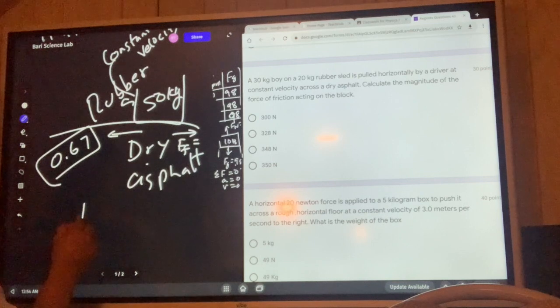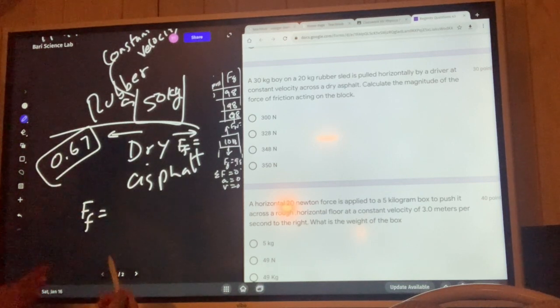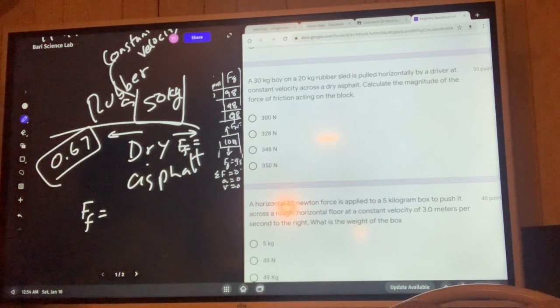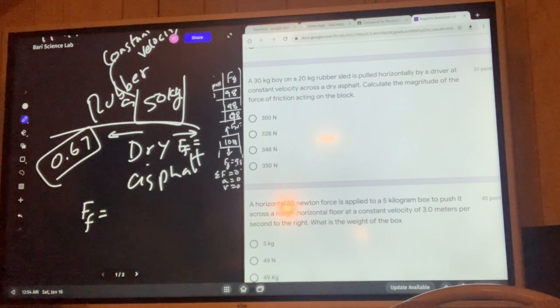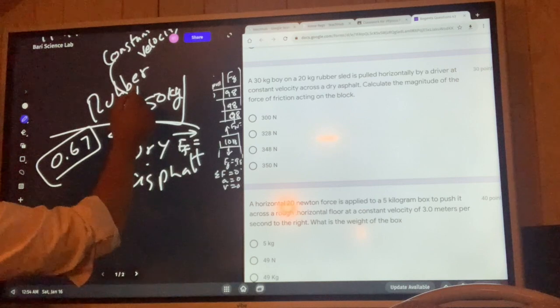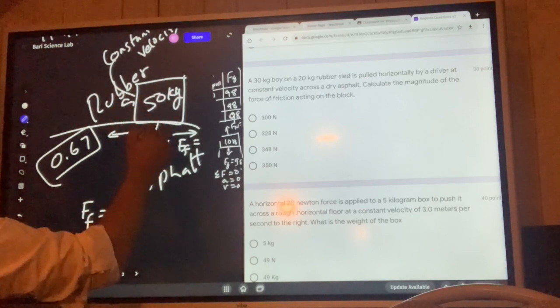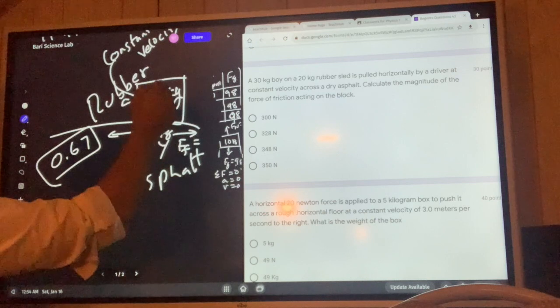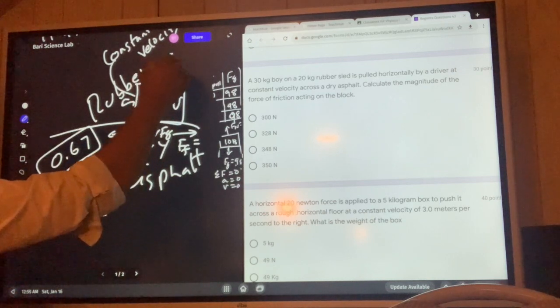The force of friction is proportional to the normal force. In order to know the friction, we have to know the normal force. The sled is 50 kilograms. This is the weight and this is the normal force, which is always perpendicular to the object.